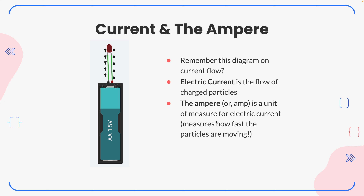Let's backtrack. Remember this diagram about current flow — current goes from the positive end of the battery through the anode, then down to the negative end from the cathode. This is electric current, and electric current is the flow of charged particles. The ampere, or amp for short, is the unit of measure for electric current.